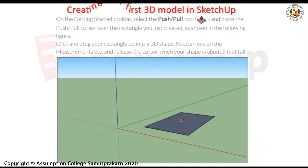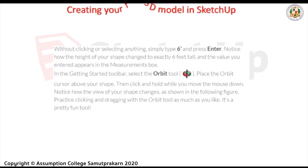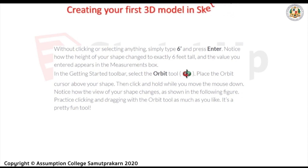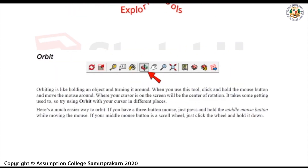Next, use the Push and Pull Tool. On the Getting Started toolbar, select the Push and Pull Tool and place the cursor over the rectangle you just created. Click and drag your rectangle up into a 3D shape. Keep an eye on the Measurements box and release the cursor when your shape is about 5 feet tall. Without clicking or selecting anything, type 6 and press Enter — notice how the height changes to exactly 6 feet. In the Getting Started toolbar, select the Orbit Tool, place the Orbit cursor above your shape, then click and hold while you move the mouse down to change the view.